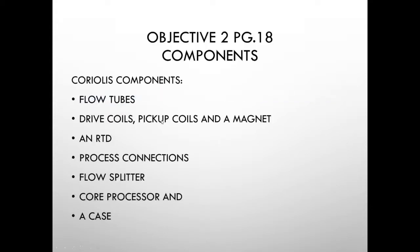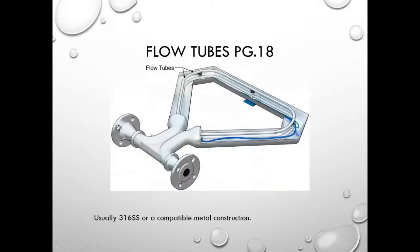Objective two: we look at some of the components of Coriolis meters. The Coriolis meter consists of flow tubes, drive coils, pickup coils and a magnet, an RTD, process connections, a flow splitter, a core processor, and a case.